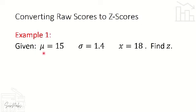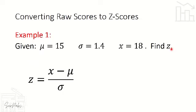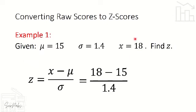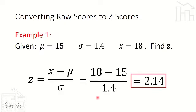Our first example: the mean (mu) is equal to 15, the standard deviation is equal to 1.4, and our raw score (X) is equal to 18. Find Z. Applying the formula, Z = (X − mu) / standard deviation. Substituting: Z = (18 − 15) / 1.4, which equals 2.14. So the equivalent Z score of 18, based on our given data, is 2.14.